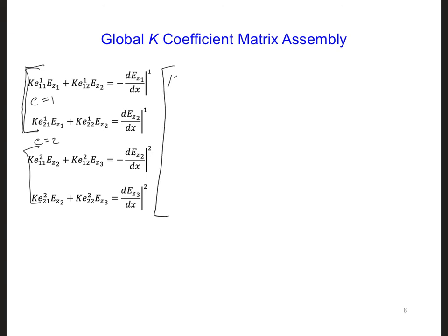So first we're going to get Ke 1,1,1, and Ke 1,2,1, and those are multiplied by Ez 1 and Ez 2.